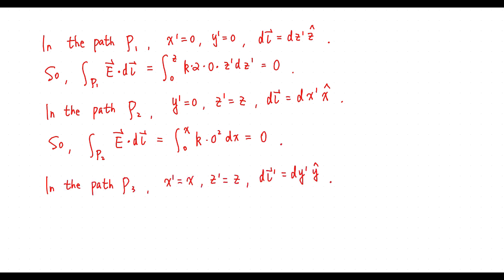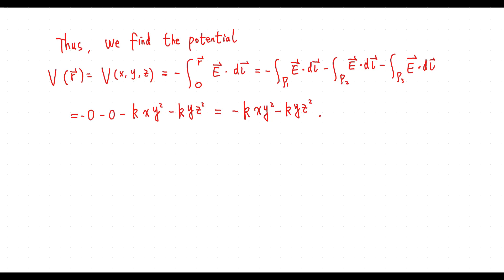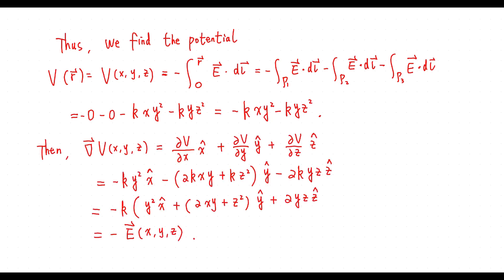In the path P3, we have this one. So the integral is given by this one. Thus, we find the potential given by this one. Then we obtain this one. This verifies our answer.